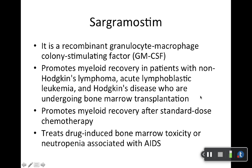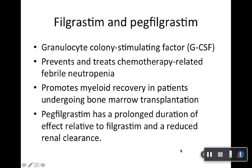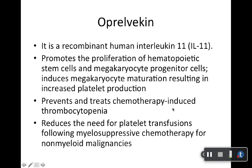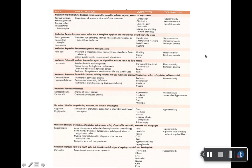Sargramostim, brand name Leukine, is mainly used in chemotherapy — a niche medicine for cancer patients and possibly AIDS patients. Then we have filgrastim and PEG-filgrastim — both granulocyte colony-stimulating factors — also used in cancer chemotherapy. Oprelvekin, formerly brand name Neumega, is now generic only. It's recombinant human interleukin-11 (IL-11), used for chemotherapy-induced thrombocytopenia. There's a great summary table — definitely put a star by it. Look through the drugs listed, their mechanisms of action, clinical applications, adverse effects, and contraindications. Note that hypersensitivity is listed for essentially everything.